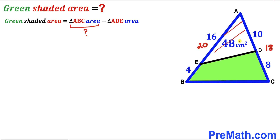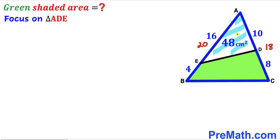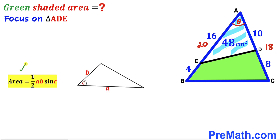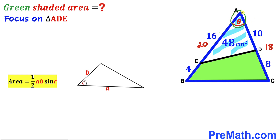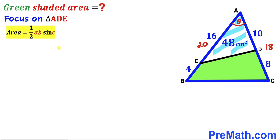Now let's focus on triangle ADE and label angle BAC as theta. The area of triangle ADE is 48 centimeters square. Recalling the triangle area formula: area equals one half times a times b times sine of angle C, where a and b are two side lengths and C is the angle between them. In our case, the two side lengths are 10 and 16, with angle theta between them.